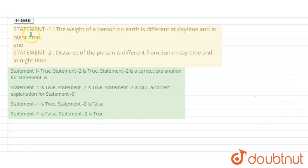It is saying that in statement one, the weight of a person on Earth is different at daytime and at nighttime. Statement two is saying that distance of the person is different from Sun in daytime and nighttime. So let's analyze this situation.